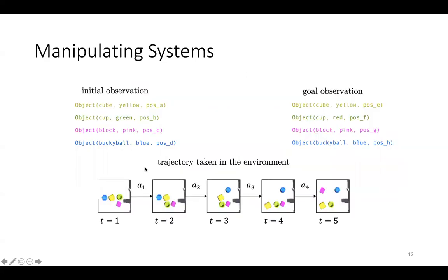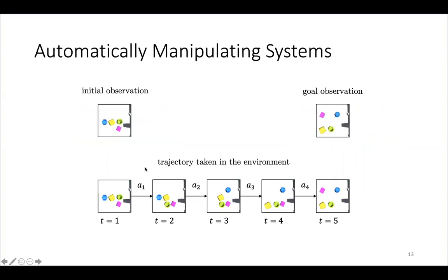Instead of humans manually specifying the goal constraints to satisfy, automatically manipulating systems requires the agents to infer these constraints directly from raw observation and translate its internal interventions into external actions in the world. Automatically modeling and manipulating systems requires overcoming two challenges, which I call the correspondence problem and the combinatorial problem.